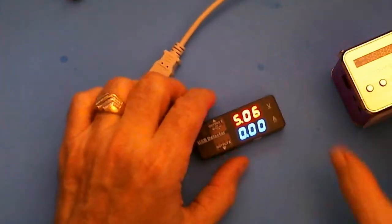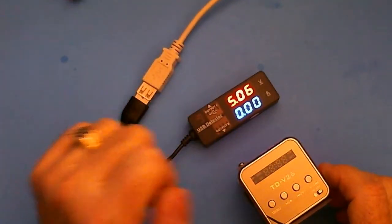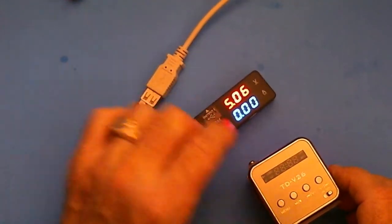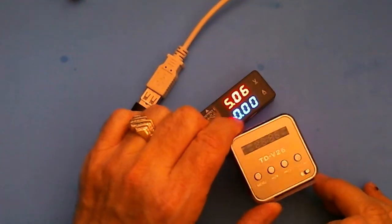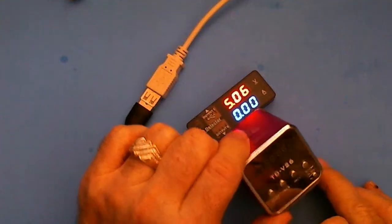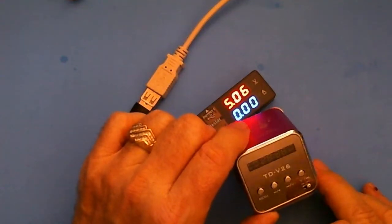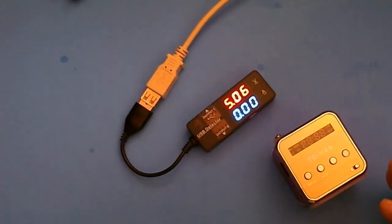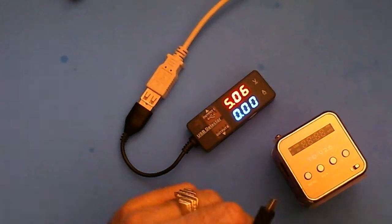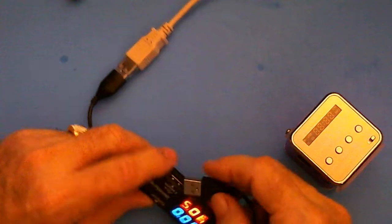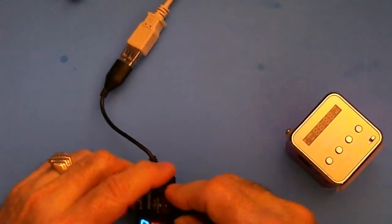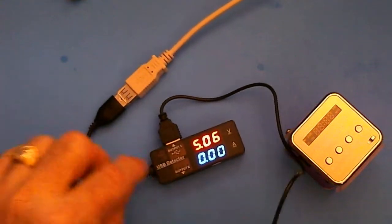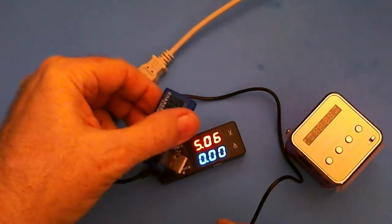What I really want to do is use this device to determine the current draw by my little cube radio MP3 player. So this is the cable that came with that, so I can hook that up to my new tester.